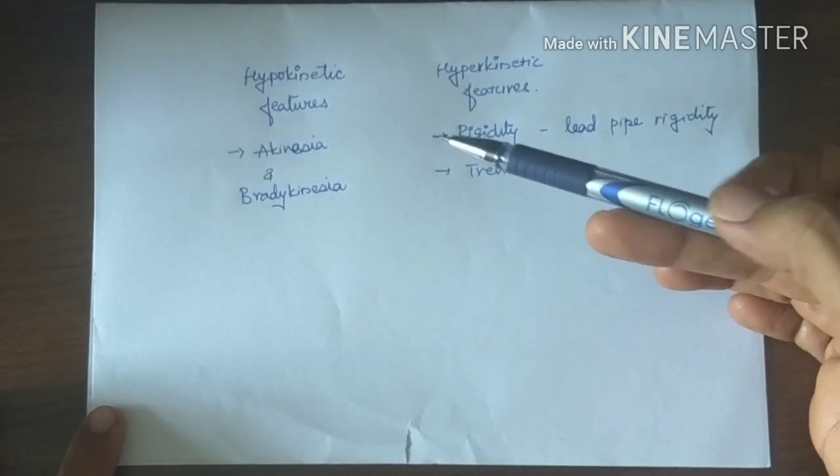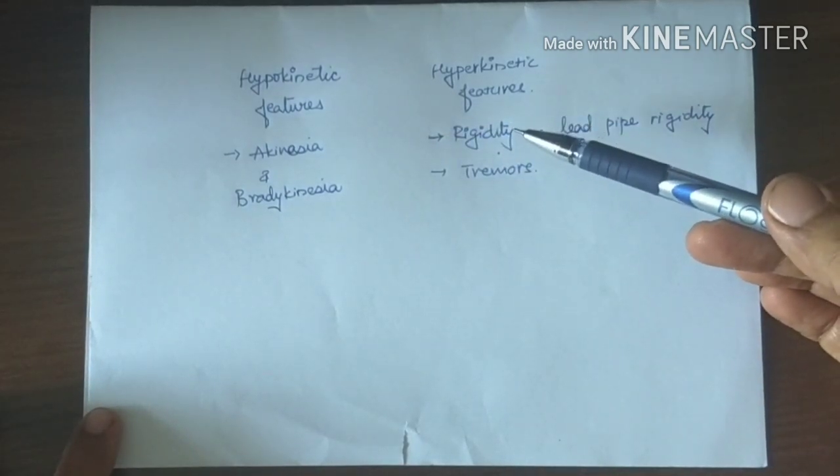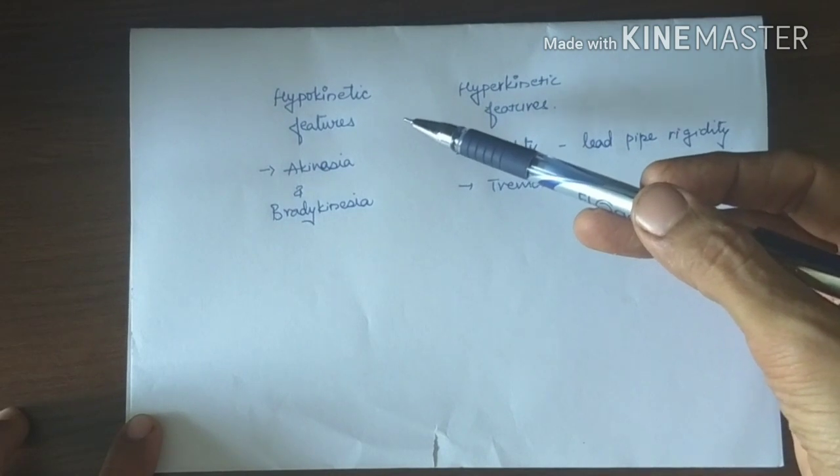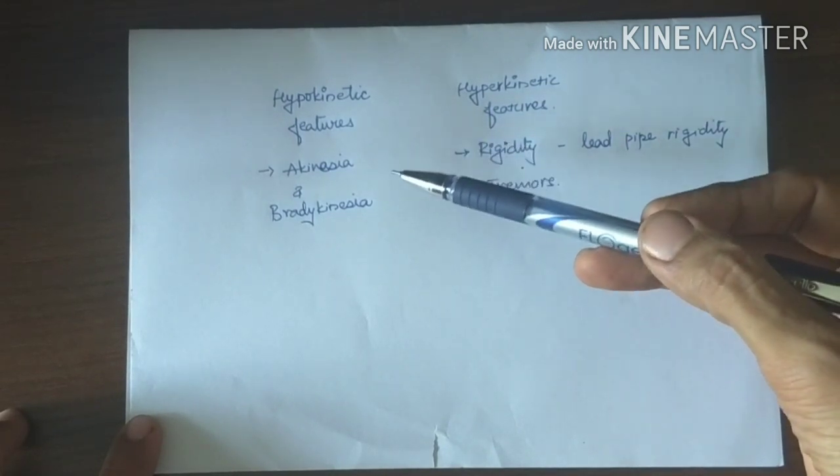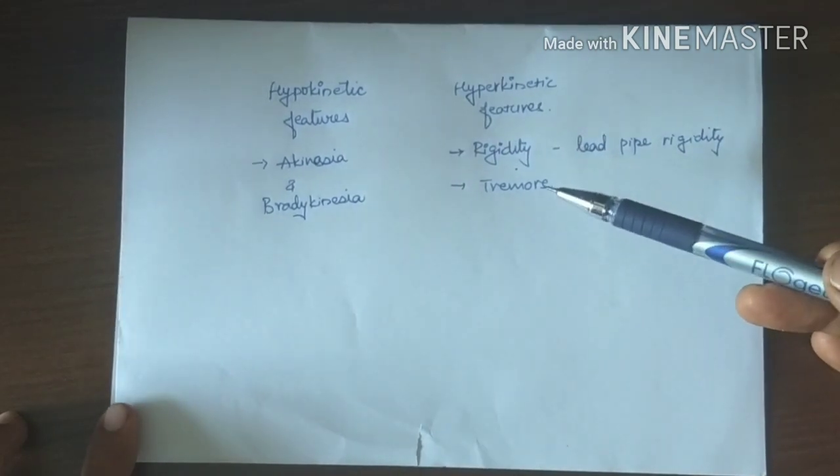gait disturbances and fatigue. For Parkinson's disease, both hypokinetic as well as hyperkinetic features can be observed.